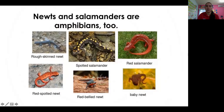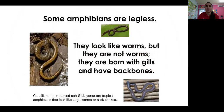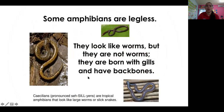We also have the salamander. They are amphibians too, and we have different types of salamander. These look like snakes or worms, but they are not worms. They are born with gills — gills means the opening that lets them breathe in the water, like a fish. And they also have back lungs. This name is caecilians.